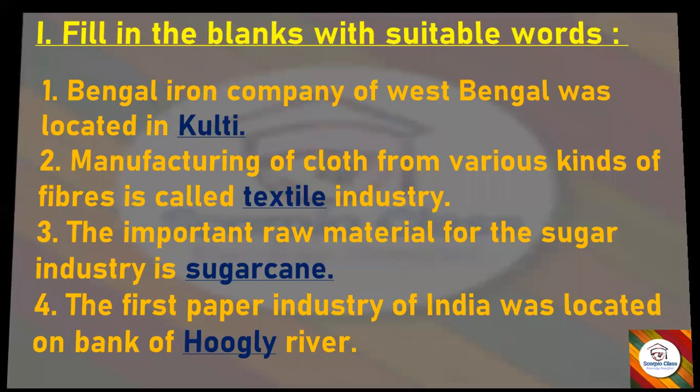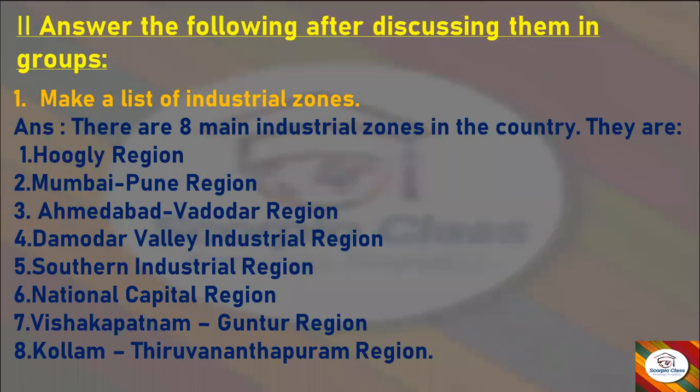Now let's move to the second section: Answer the Following Questions. The first question is: Make a list of industrial zones. Answer: There are eight main industrial zones in the country. They are the Hooghly Region, Mumbai-Pune Region, Ahmedabad-Vadodara Region, Damodar Valley Industrial Region, Southern Industrial Region, National Capital Region, Visakhapatnam-Guntur Region, and Kollam-Thiruvananthapuram Region. These are the eight main industrial zones in our country.